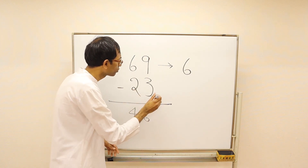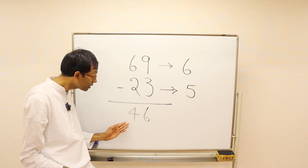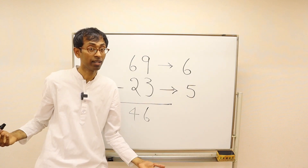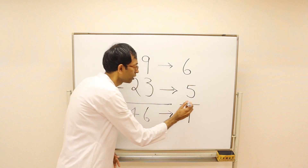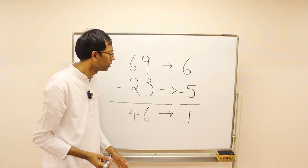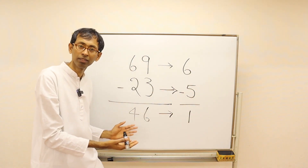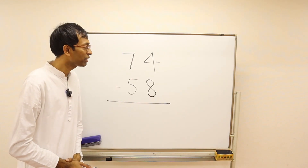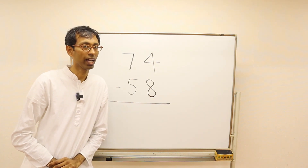The digit sum of 23 is 2 plus 3 equals 5. The digit sum of 46 is 4 plus 6 equals 10, and 1 plus 0 equals 1. Since this is a subtraction, we do 6 minus 5, which is 1 — the answer checks out and is probably correct. Now pause the video, do this subtraction, and check the answer with a digit sum check.